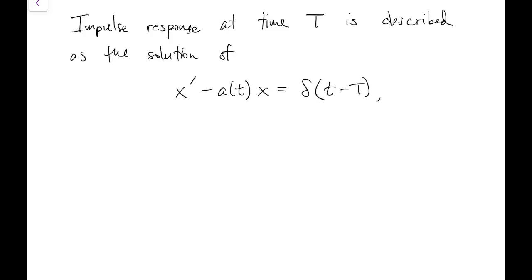Let's generalize. To keep with our delta epsilon notation, if we want an impulse at time T, we describe that as the solution with forcing function delta of t minus T. This is called the delta function or Dirac delta function. It doesn't actually behave like a function should, so it's not really a function.